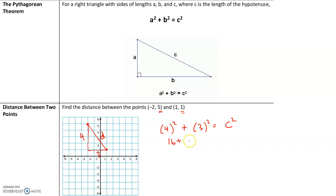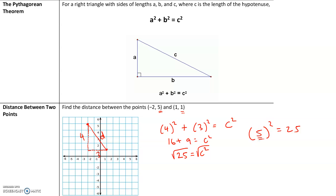So 4² + 3² = c². That gives us 16 + 9 = 25 = c². To undo the square, we take the square root: the square root of 25 is 5, since 5² = 25. So the distance between these two points is 5 units.